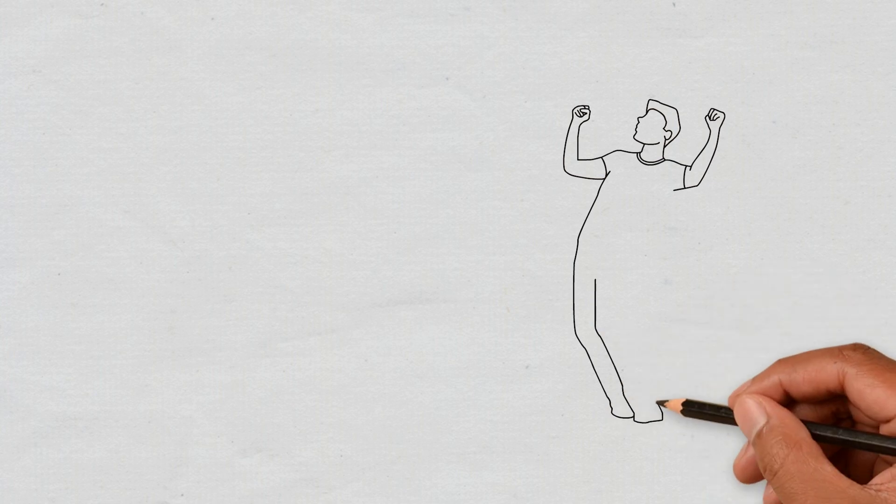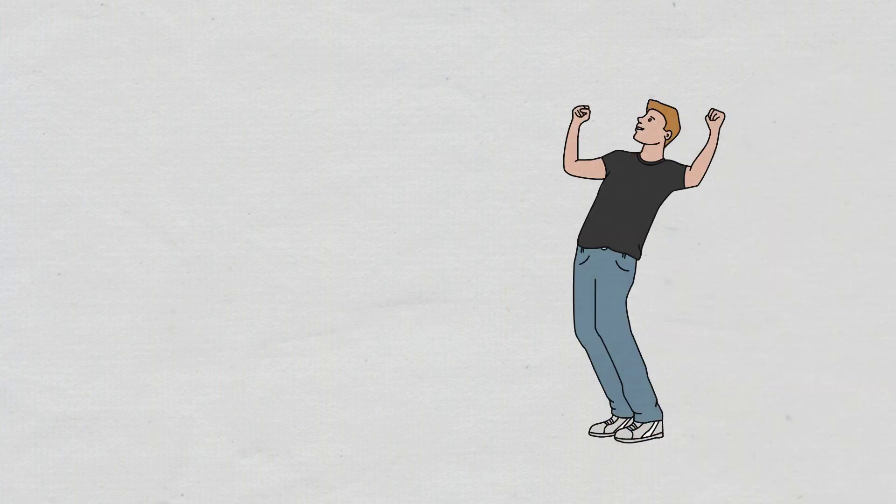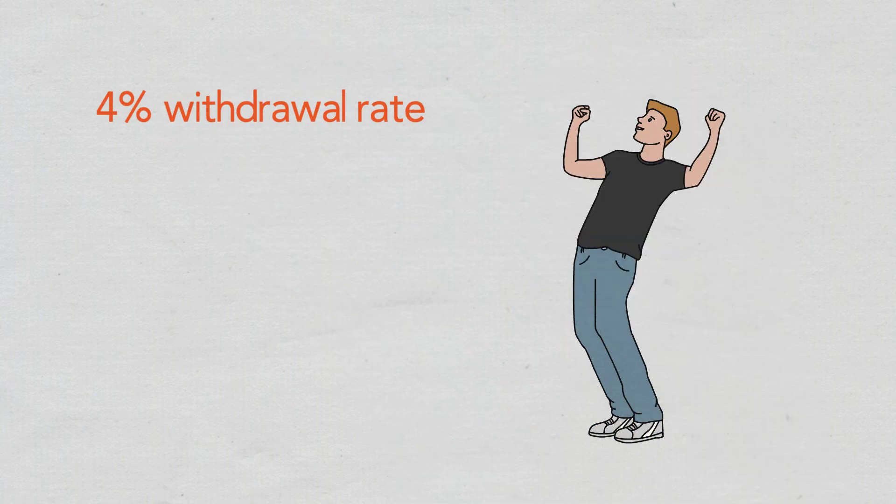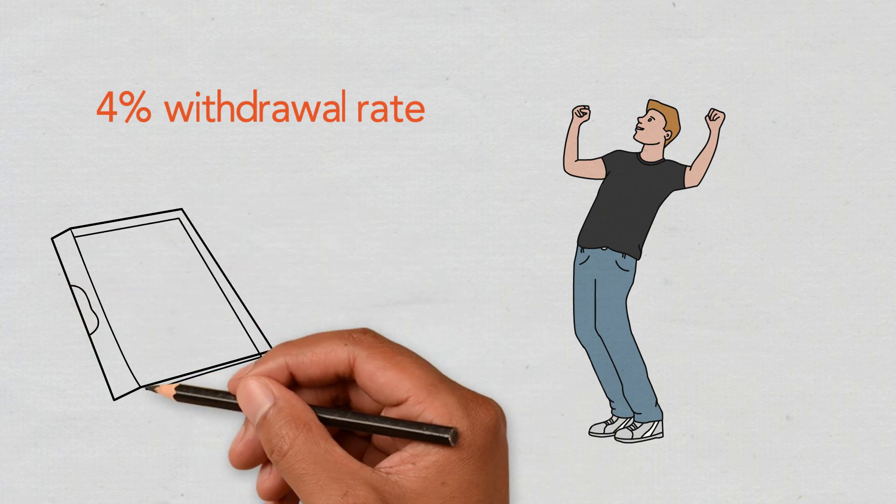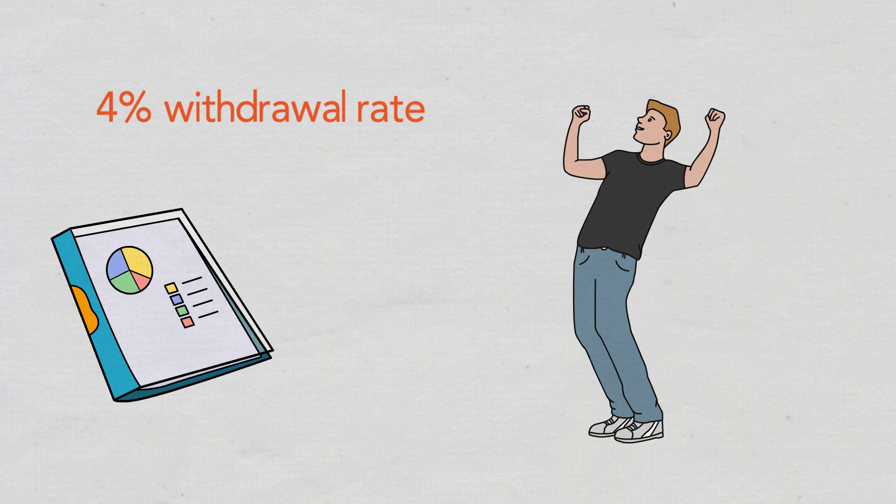Pete and his wife maxed out their 401k accounts, made extra mortgage payments, and put the remainder in taxable Vanguard index funds. This ultimately led to their 4% withdrawal rate that they'd be using. They purchased inexpensive investments instead of higher-cost mutual funds that charge high annual fees.